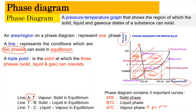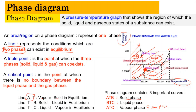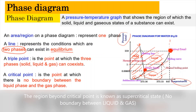Next, we have the triple point, labeled as T, which is connected with all three lines. The triple point is the point at which all three phases — solid, liquid, and gas or vapor — can coexist in equilibrium. The critical point is where the liquid and the vapor or gas could not be distinguished or identified. It is the point at which there is no boundary between the liquid phase and the gaseous phase.